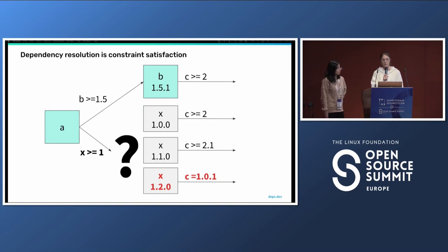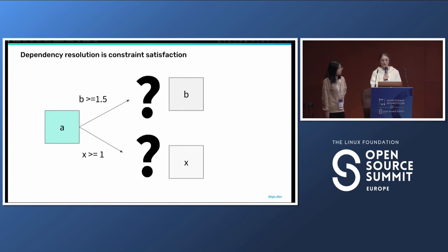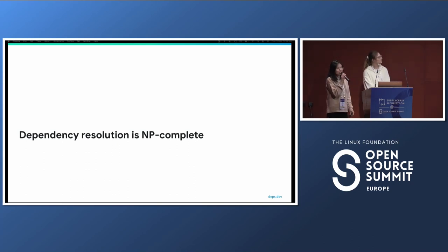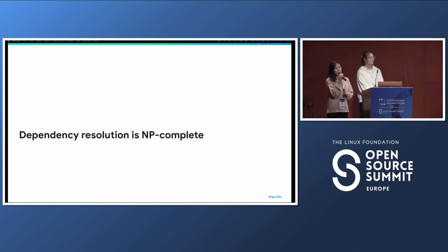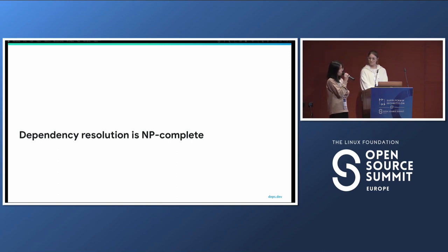The resolution algorithm may not pick version 1.2 of X because it introduces an unresolvable conflict on package C. But the algorithm can also choose between different versions of B — there might be a version of B with a different requirement on C that doesn't conflict, or a version that doesn't depend on C at all. In fact, dependency resolution is an NP-complete problem because it's a form of the constraint satisfaction problem. Any true solution must brute-force through all possible combinations of package versions, checking whether each combination satisfies the requirements.